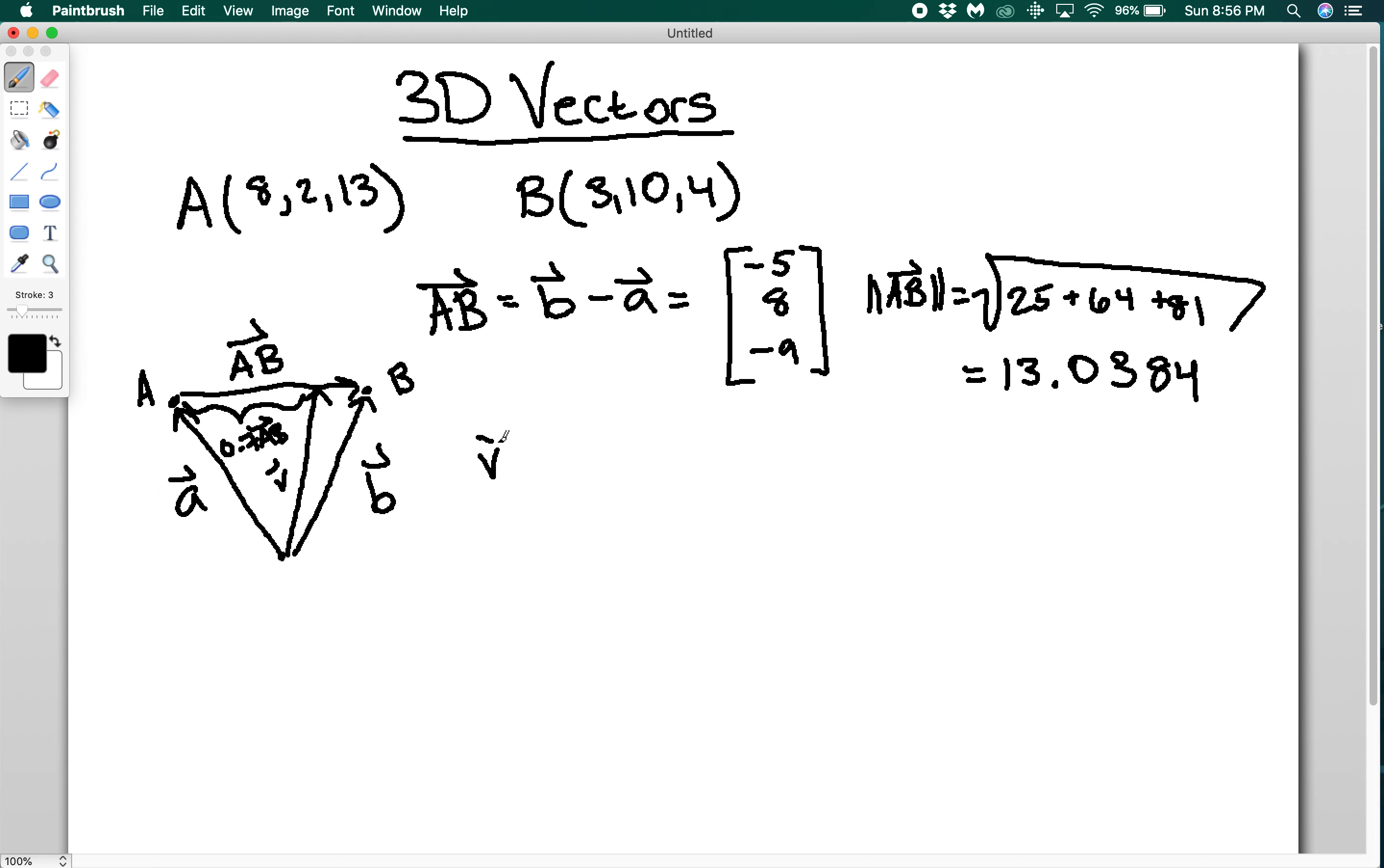So to figure out what this vector is going to be, I'm going to do 0.7 times vector AB plus vector A. So that's going to give me 0.7 times (-5, 8, -9) plus (8, 2, 13). And when I do that out, I'm going to end up with (4.5, 7.6, 6.7).